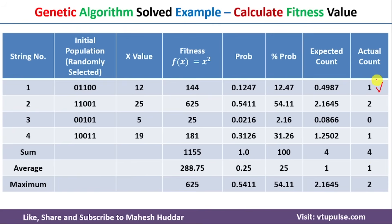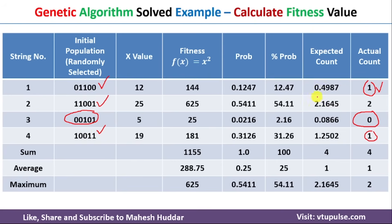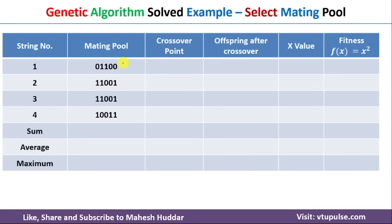Based on the actual counts, we select solutions for crossover and mutation. The third chromosome has actual count 0, so it will not be selected. Chromosome 1 is selected once, chromosome 2 is selected twice, and chromosome 4 is selected once. This forms the mating pool of four chromosomes: chromosome 1, chromosome 2 (twice), and chromosome 4.